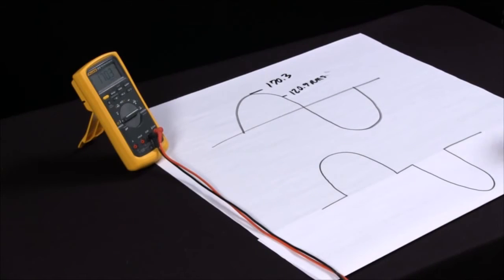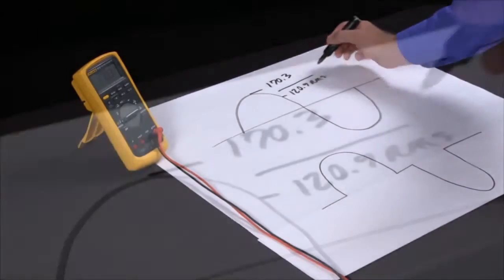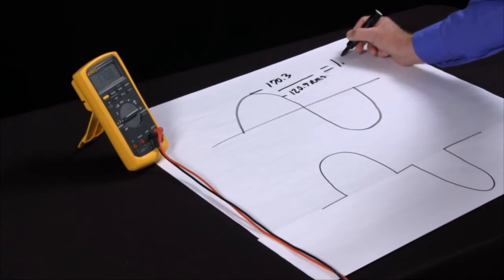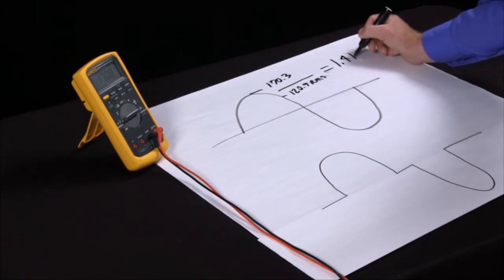Now there's something called the crest factor, which if I divide the RMS into the peak on a nice clean sine wave, this should come to 1.414.